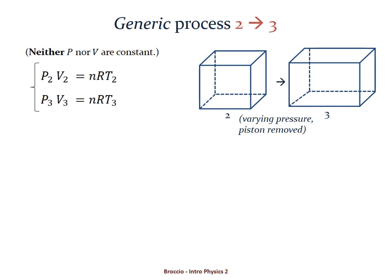We can write the ideal gas law twice for states 2 and 3. We can actually write NR the constants as either P2 V2 over T2 or P3 V3 over T3.